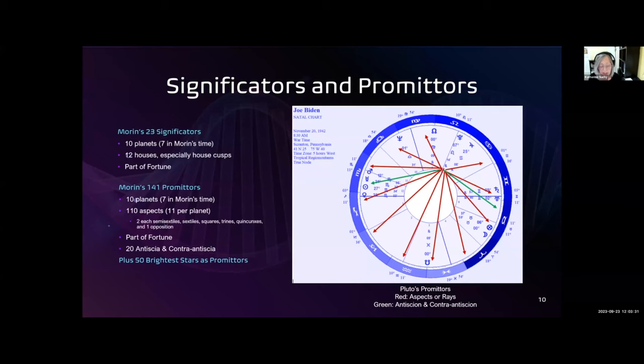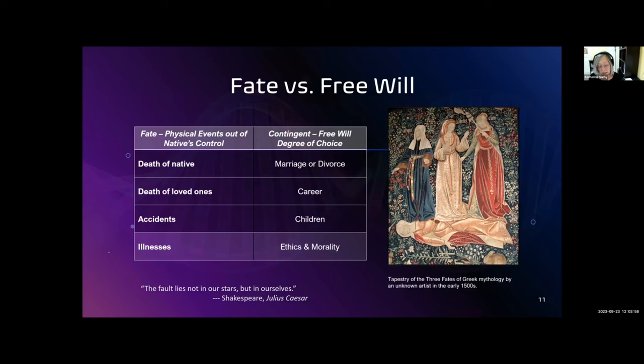In addition to that, one natal planet signifies more than one thing. For example, Jupiter, as the ruler of the ascendant, signifies the life. By position in the eighth house, it signifies inheritance, money of a partner, and threats to life. And as the ruler of the fourth house, it signifies the home, a parent, and the end of life. So there's really a lot going on in primary directions.